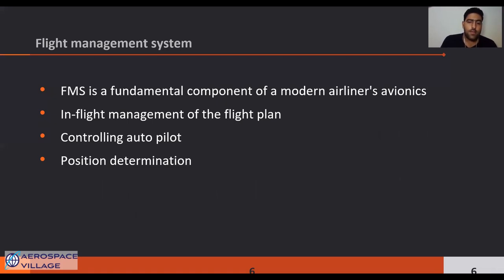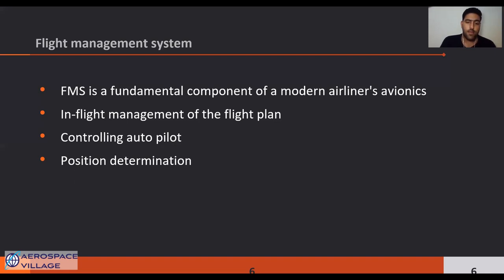A flight management system is a fundamental component of a modern airliner's avionics. In many ways it is like the GPS in your car, with waypoints programmed in between the origin and the destination — you program in where you are going and off it goes. The primary function is in-flight management of the flight plan. Using various sensors to determine the aircraft position, the FMS can guide the aircraft along the flight plan and allow the airplane to hook up to the autopilot and maintain the heading within a few feet.